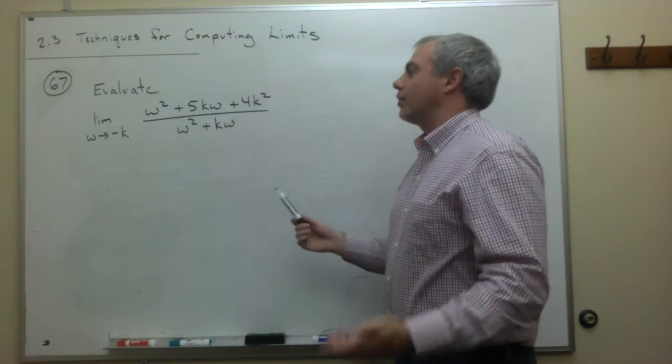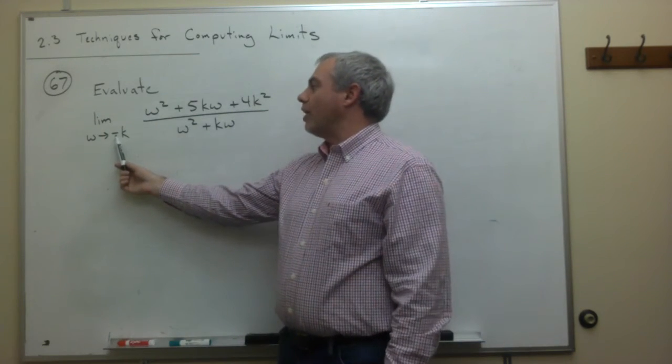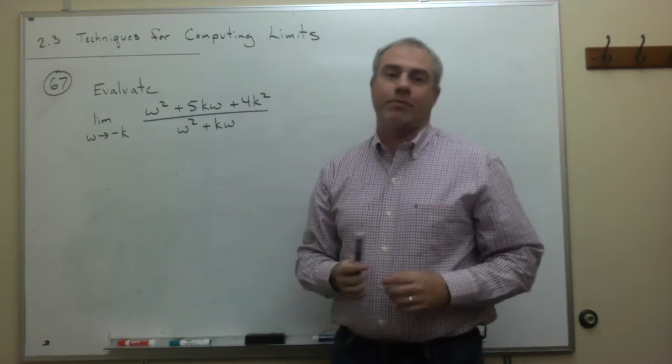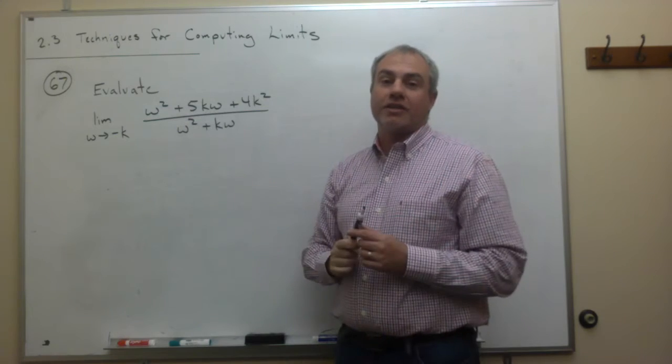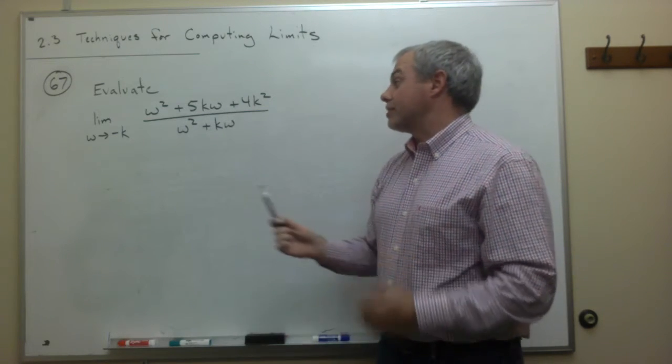We know what we need to do here. First thing I need to do is look at what if I plugged in negative k for w. If I plugged in negative k for w, is everything okay on the bottom or do we get division by zero? That's the first thing we need to look at.